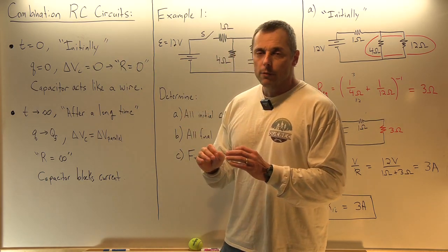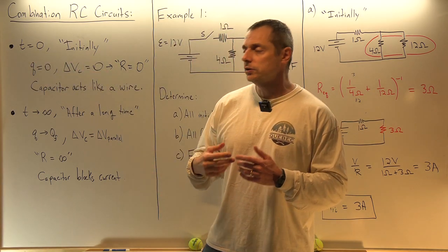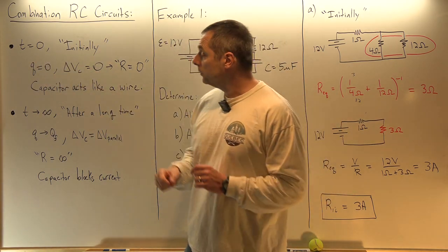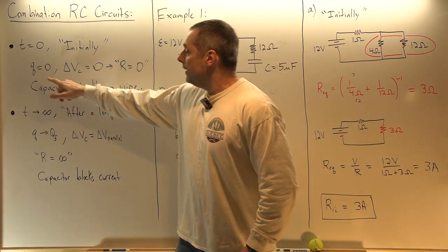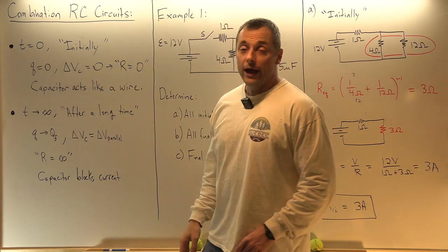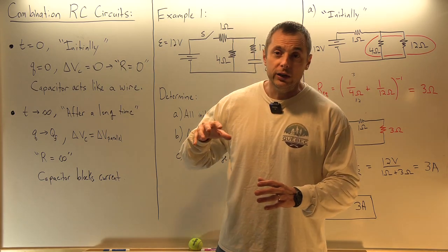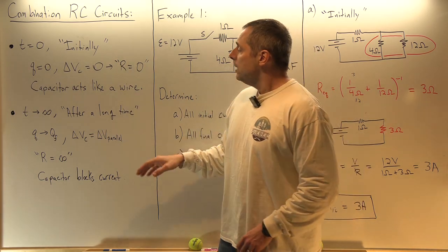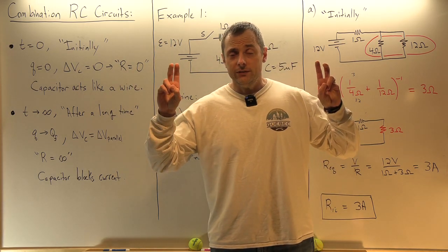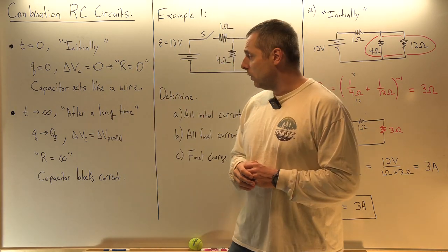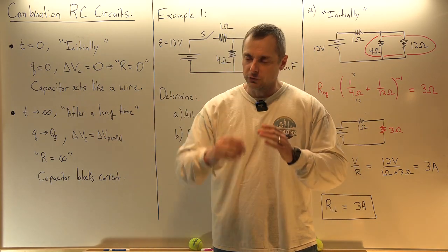The thing you need to know about the moment the switch comes down — T equals zero, which they refer to with words like 'initially' or 'at time zero' — is that the charge on the capacitor is zero and therefore it has no voltage across it. That means charge can freely go into the capacitor without any resistance. Think of it as a resistor of resistance zero. The capacitor essentially acts like a wire at that moment just when the switch flips down.